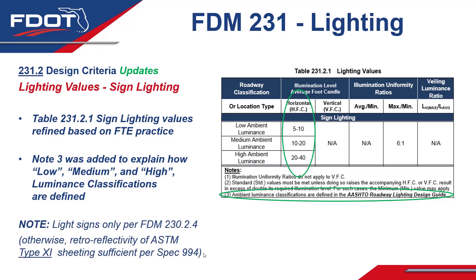The last important thing to note is that when considering sign lighting, you'd want to light signs only per FDM 230.2.4, where you'll find the usage thresholds. If it's determined that sign lighting is not needed, it's assumed that the retro-reflectivity of ASTM Type 11 sheeting is sufficient per Specification 994. Not all signs automatically require lighting.